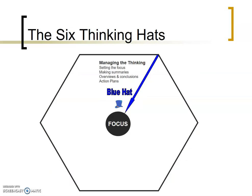The first hat is the blue hat — blue as in sky, as in the overview. In the blue hat we're thinking about: what is the purpose of this meeting, and what is the decision we need to take? As an example, let's say we need to add a new production line onto the factory floor. We've got three production lines and we want to add a fourth, so we're taking the decision whether we should or should not add a production line — that's the goal of this meeting.